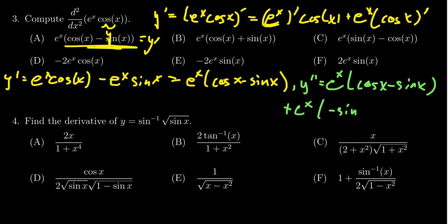The derivative of cosine is a negative sine, and then the derivative of negative sine is going to be a negative cosine.